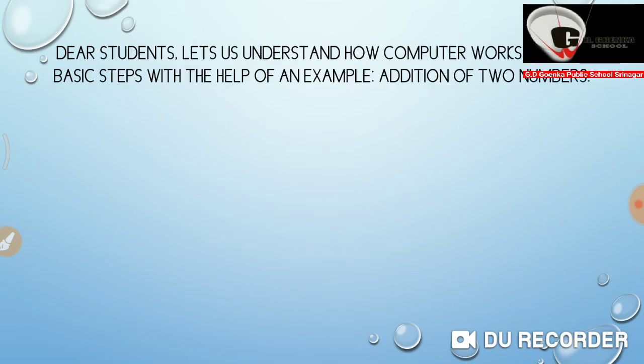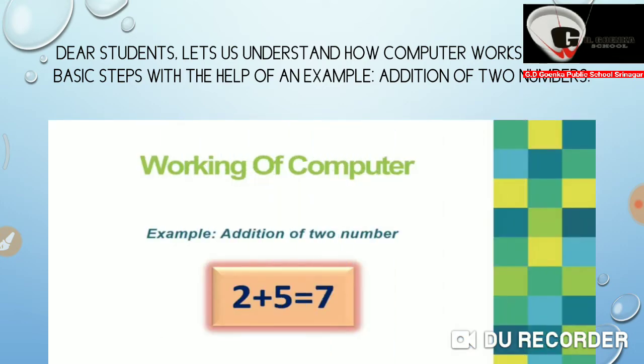Dear students, as we know that a computer works in three basic steps, that is, input, process and output. Now today, let us understand how computer works in these three basic steps with the help of an example, that is, addition of two numbers.